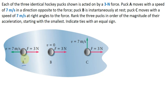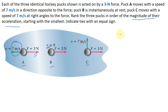In this question, three identical hockey pucks have different initial velocities: Puck A has velocity 7 m/s opposite to the applied force, Puck B has instantaneous velocity 0, and Puck C has velocity perpendicular to the applied force. We need to rank these three pucks in order of magnitude of their acceleration, starting with the smallest. Acceleration equals net force divided by mass.